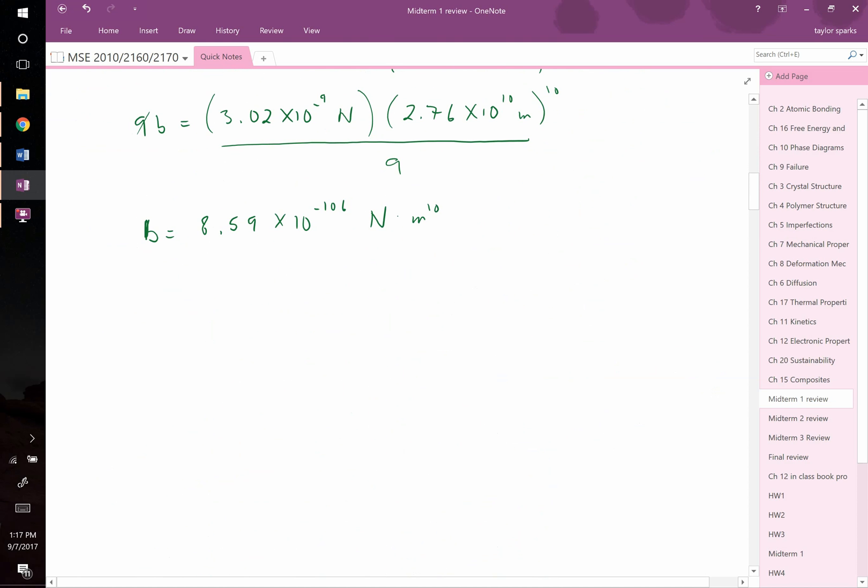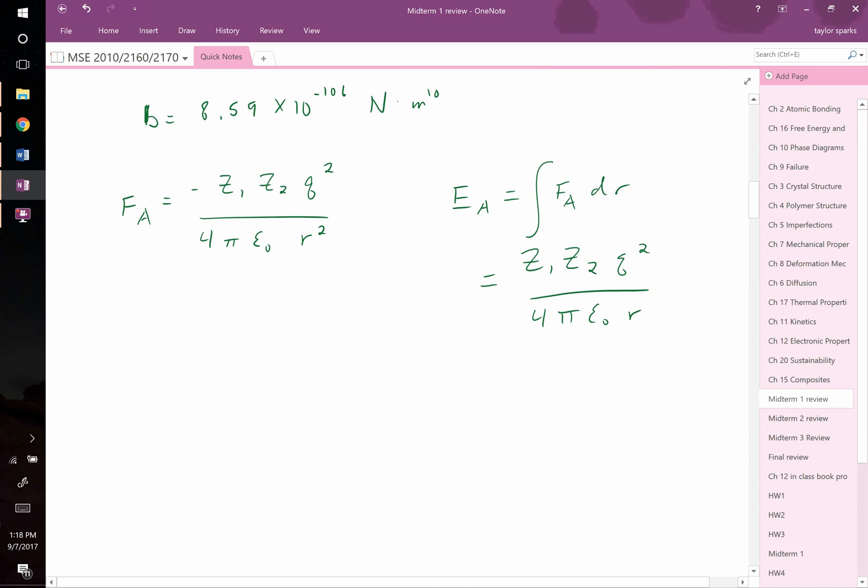We know that Fa equaled negative Z1 times Z2 times the charge Q squared divided by 4 pi epsilon naught R squared. If we take the integral of Fa dr, we find that the attractive energy component is equal to positive Z1 times Z2 times Q squared divided by 4 pi epsilon naught times R. We're almost there and ready to solve for the final expression now.